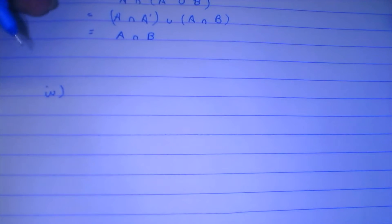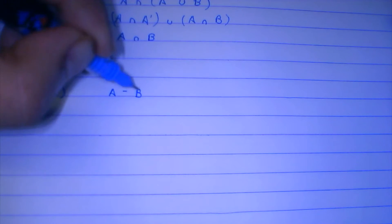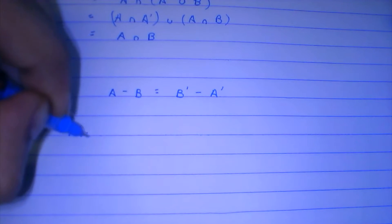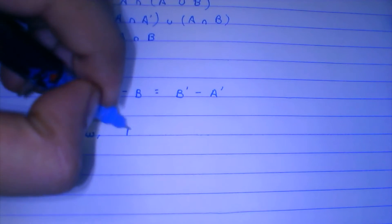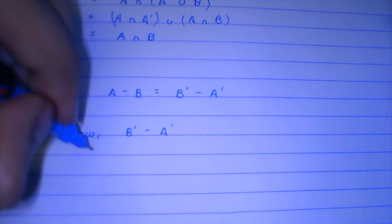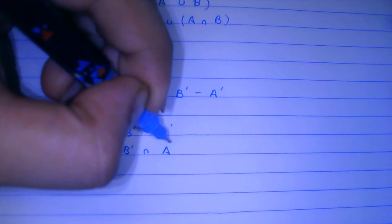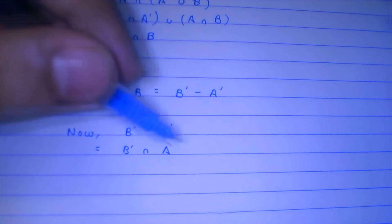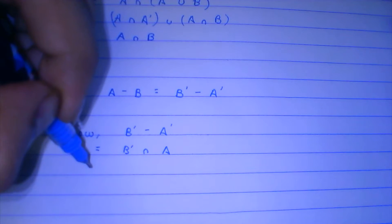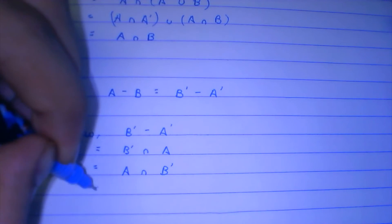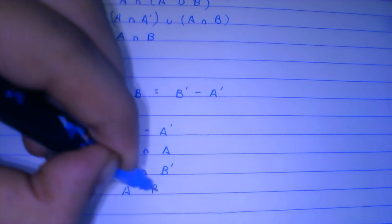Next we have to prove that A minus B is equal to B complement minus A complement. Taking the RHS: B complement minus A complement is equal to B complement intersection (A complement) complement, which is A complement complement, which is A itself. Reordering the terms, if you identify it, that is just A minus B. So the identity is proved.